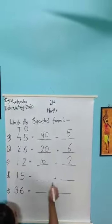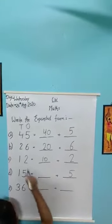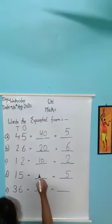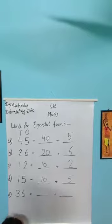Yahan pe fifteen hai. So, yahan pe, five ki value batayenge. Five. Phir, yahan pe hai, one ki. Kis pe hai? Tens hai, yahan pe, ten likha. Ten plus five, fifty. Good.